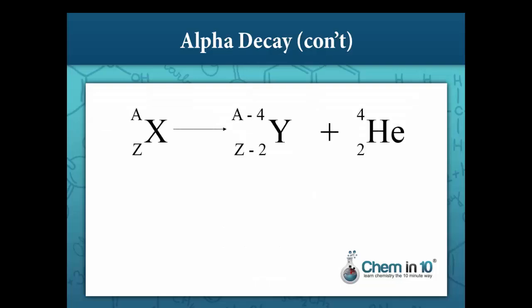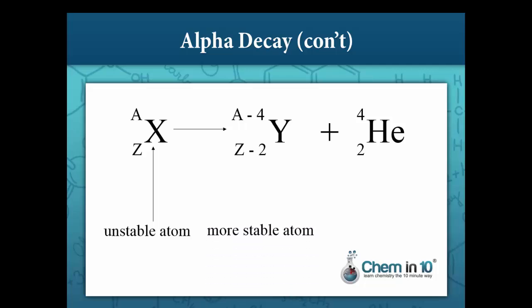Here is the general nuclear equation for alpha decay. The nuclide X emits an alpha particle becoming a new nuclide Y. X represents an unstable atom which becomes more stable by emitting an alpha particle. Notice that the mass number of the new nuclide Y is four less than that of X, because an alpha particle with a mass number of four was given off. Also, the atomic number of Y is two less than that of X, because two protons were given off as an alpha particle.